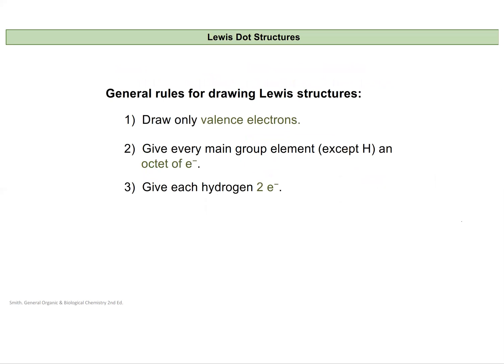Here are a few general rules for Lewis dot structures. First, we're only going to look at our valence electrons — we will not concern ourselves with electrons in the inner shells of an atom. Only the ones furthest from the nucleus participate in bonding. We're going to make sure that everything in the main group gets an octet of electrons, with the exception of hydrogen. We'll talk about a few exceptions to the octet rule, but it's safe to assume you're working with an octet unless otherwise stated.